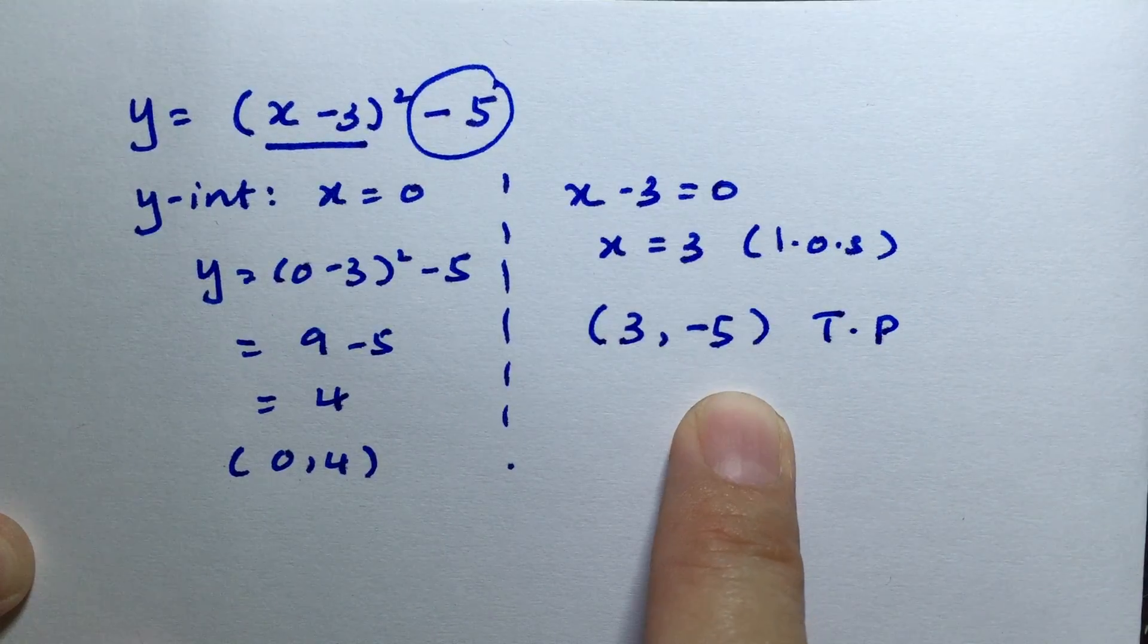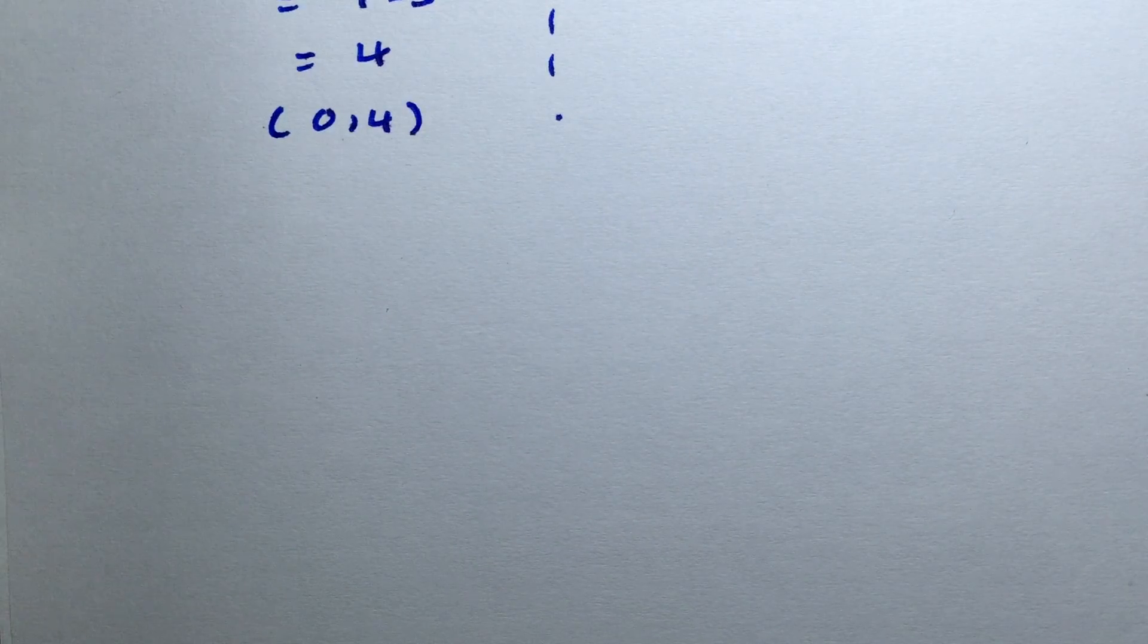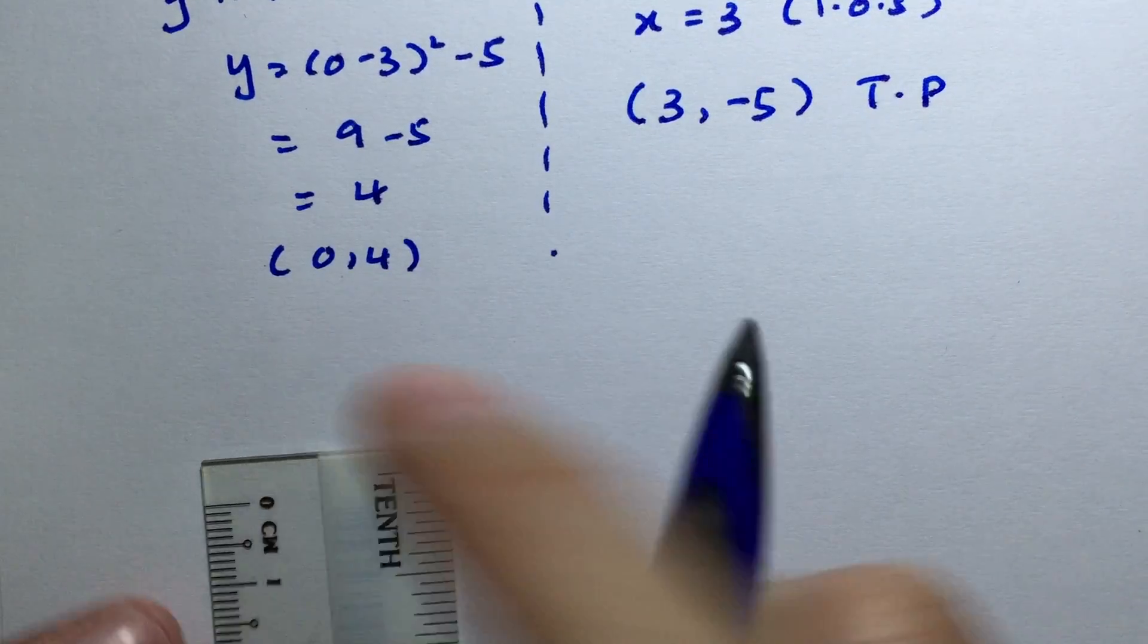With these two coordinates, we can sketch the graph. We'll set up our axes with the point (0, 4).